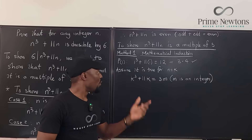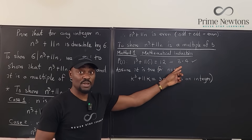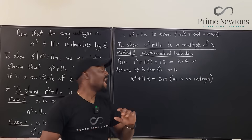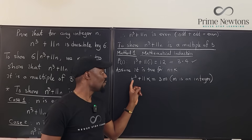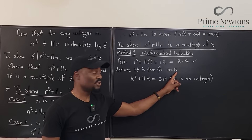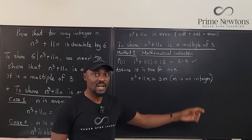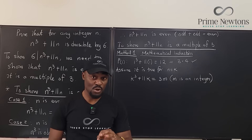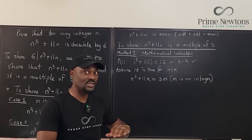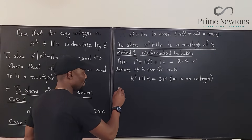We're going to assume this is true for n equals k, which means k cubed plus 11k equals 3m, where m is an integer — it's a multiple of 3. We tested the first case and saw it was true. We just want to be sure it doesn't matter what the integer is. Whenever the integer is k, we assume it is true. We just need to show it is true for the next integer after k.